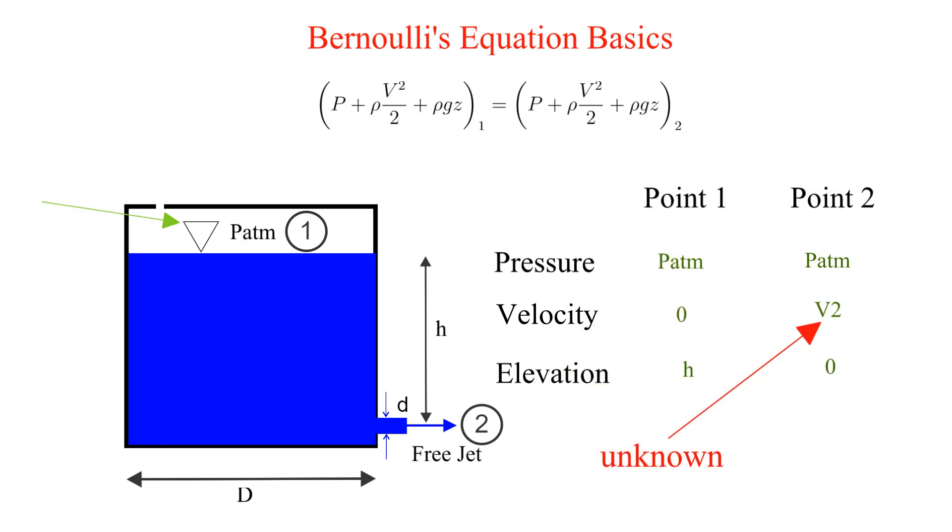The velocity at point 1 is considered to be 0. Is it 0? No, if it were then we are not analyzing along a streamline. If the diameter of the tank, capital D, is much greater than the diameter of the free jet, small letter D, then this is a reasonable assumption.